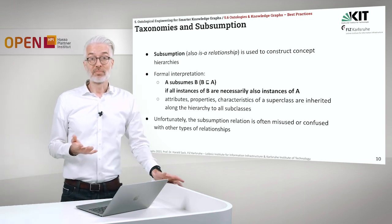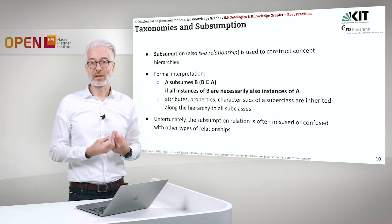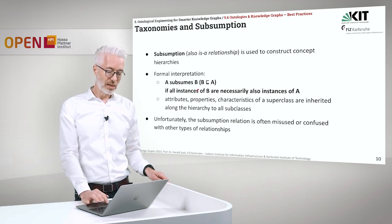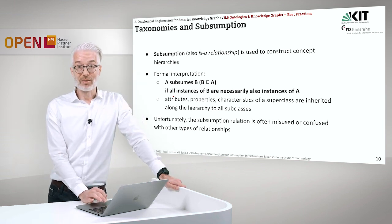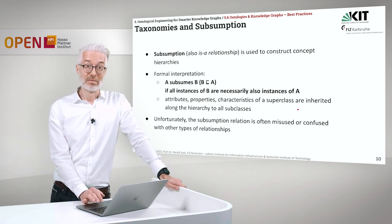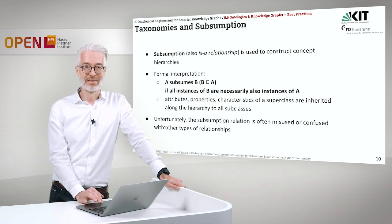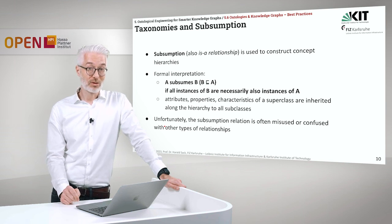What is a subsumption? Subsumption is also an ISA relationship, and this is used to construct concept hierarchies. Formally, A subsumes B means B is a subclass of A, if all instances of B are necessarily also instances of A. And this also means attributes, properties, and characteristics of a superclass are all inherited along the hierarchy to all subclasses. But unfortunately, the subsumption relation is often misused or confused.